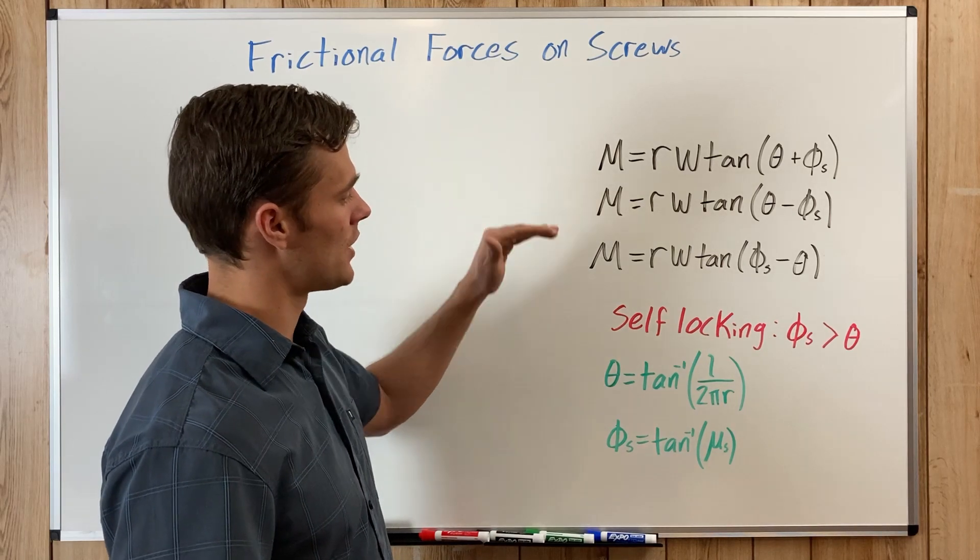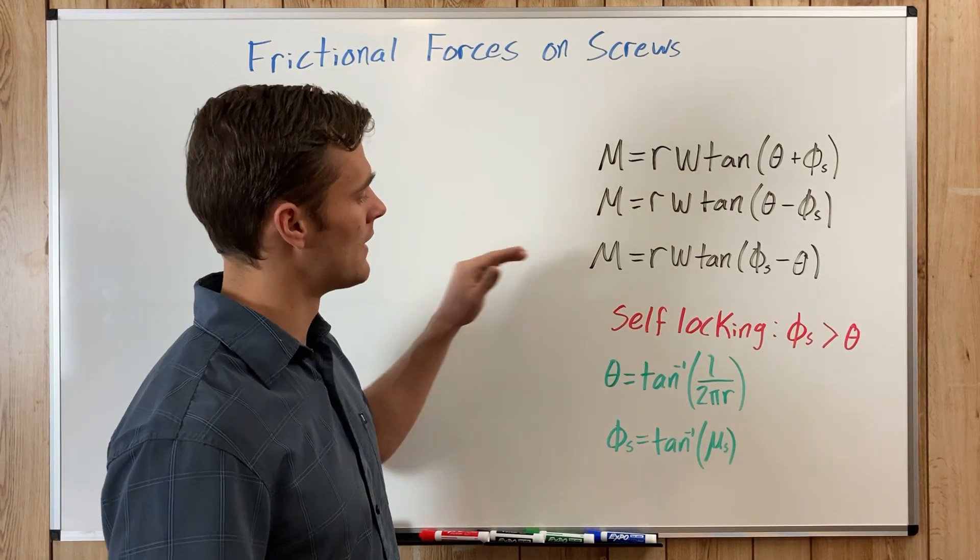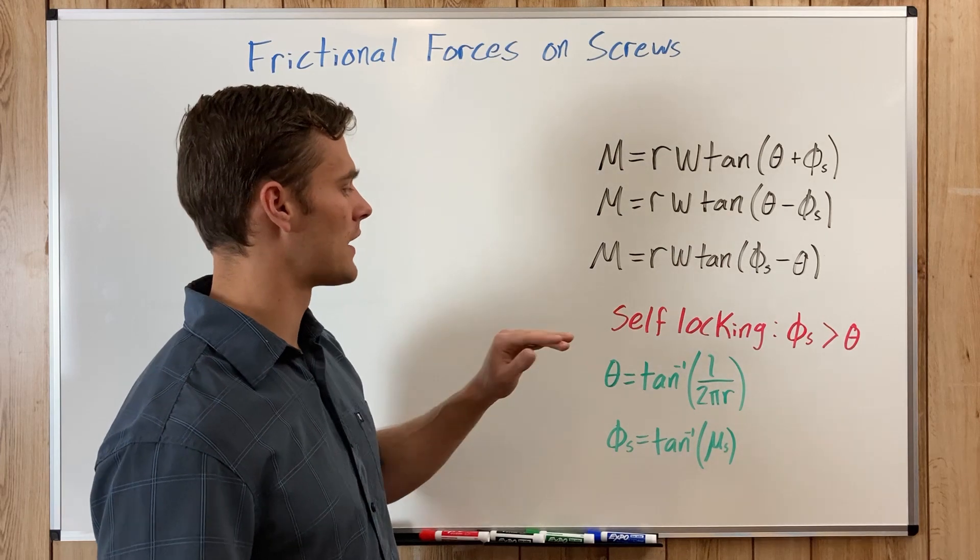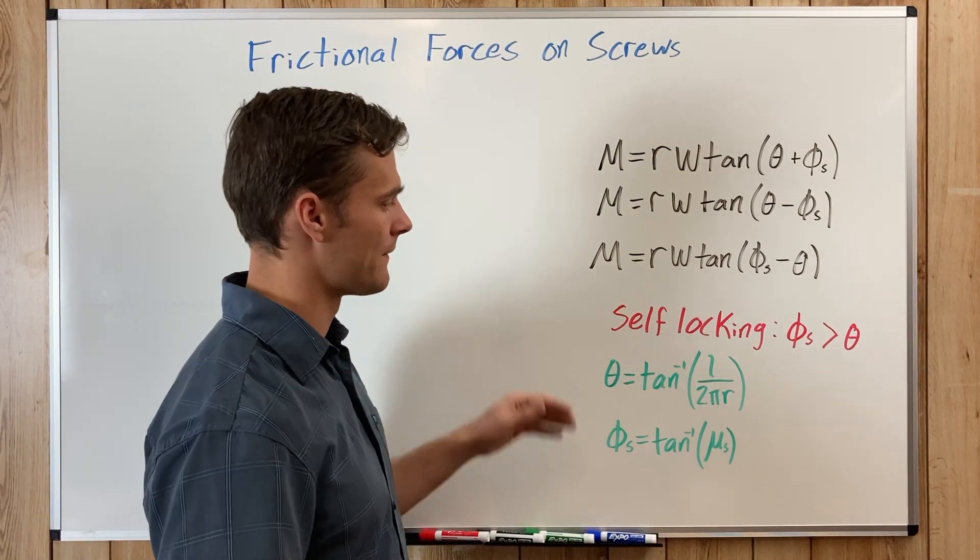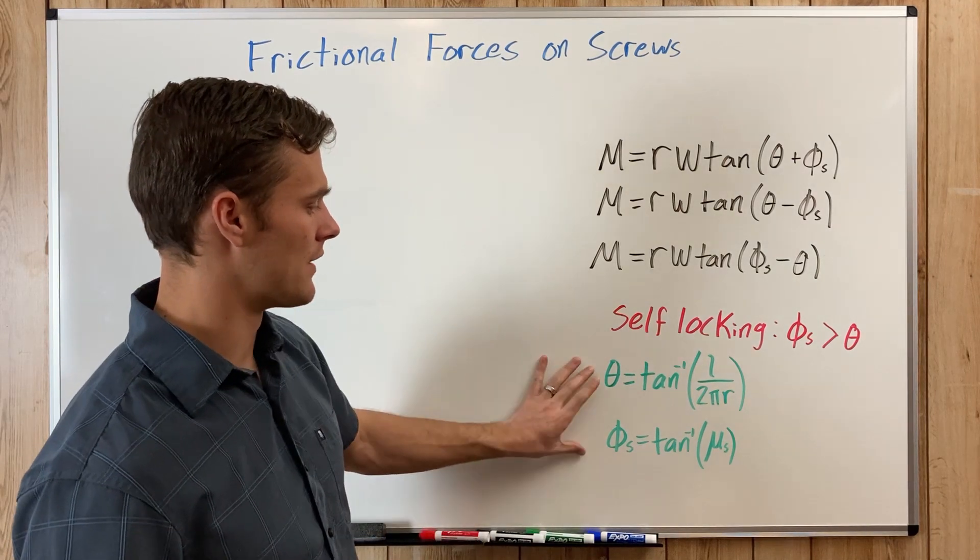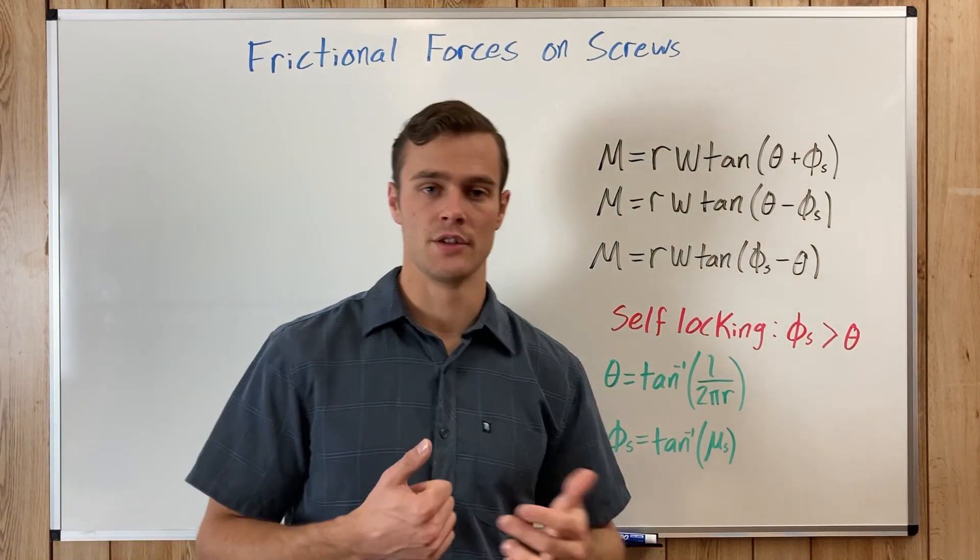If it is self-locking, you use this equation. You'll know if it's self-locking if the angle phi is greater than the angle theta, and you can calculate those out if you need to.